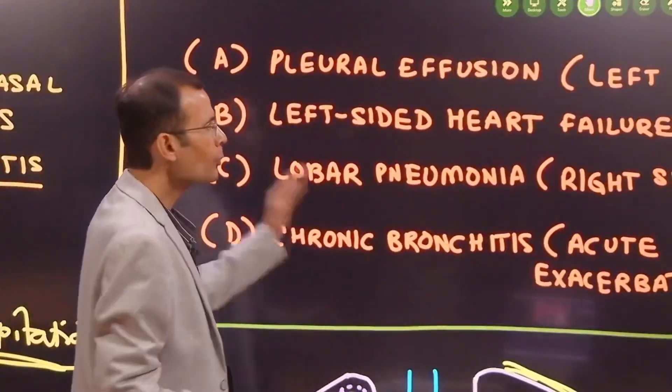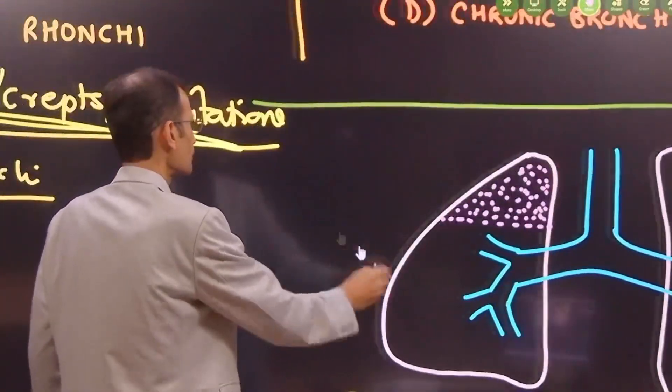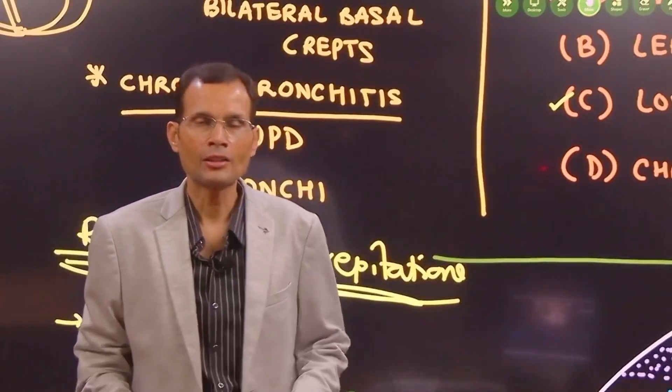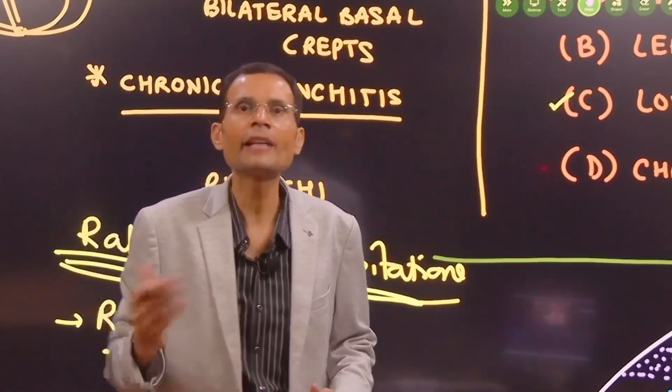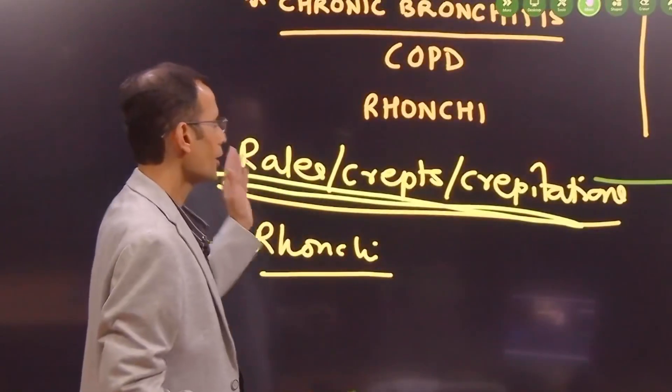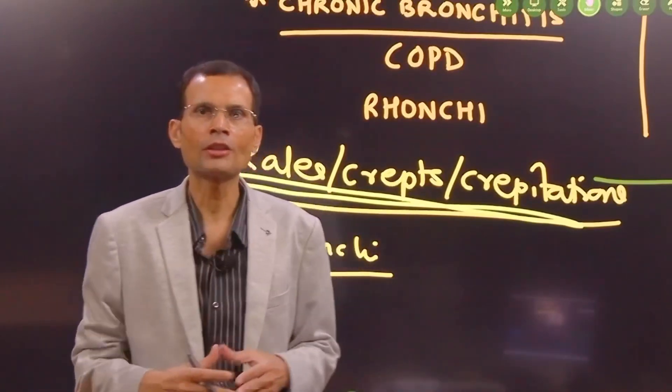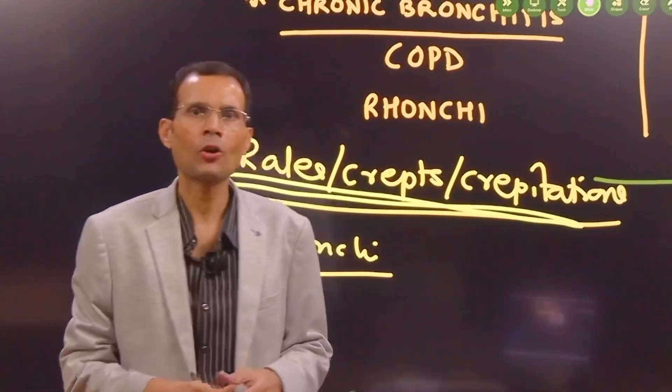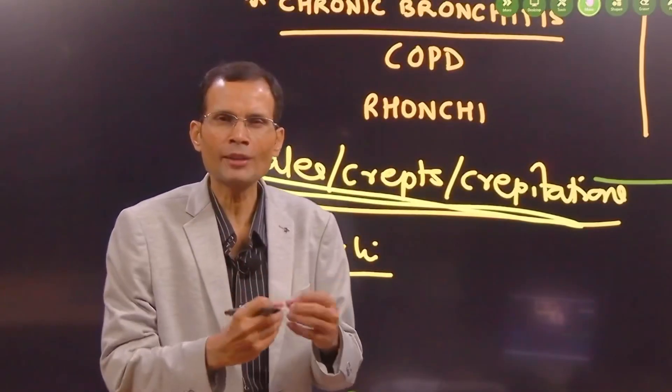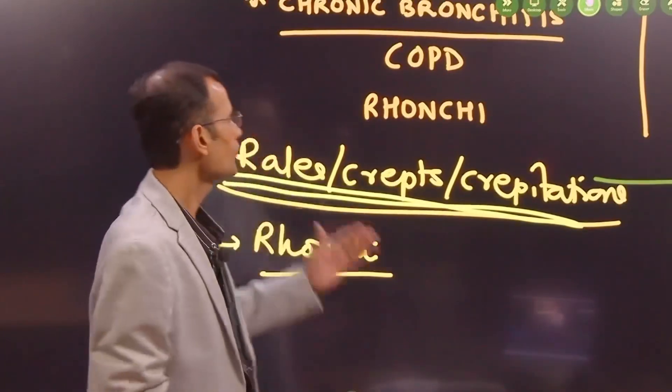That leaves us with two options - whether it is pleural effusion on the left lung, left side, or lobar pneumonia on the right side. Let's explore these possibilities further. Right-sided creps are heard, or creps are heard on the right side - that is what is mentioned here. What are these creps or rales or crepitations or crackles? Imagine a bucket full of water and you dip a mug into it or some bottle, and you get bubbling sounds.